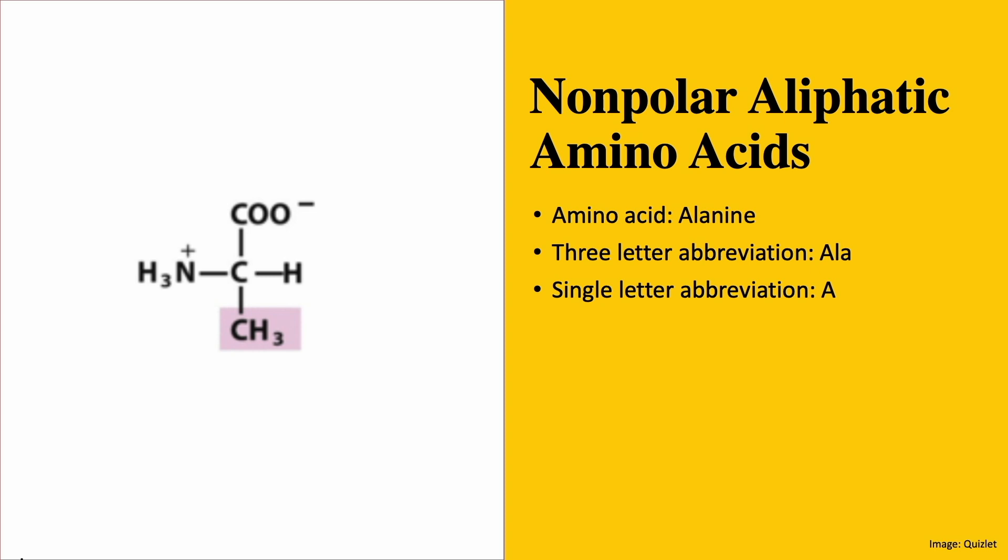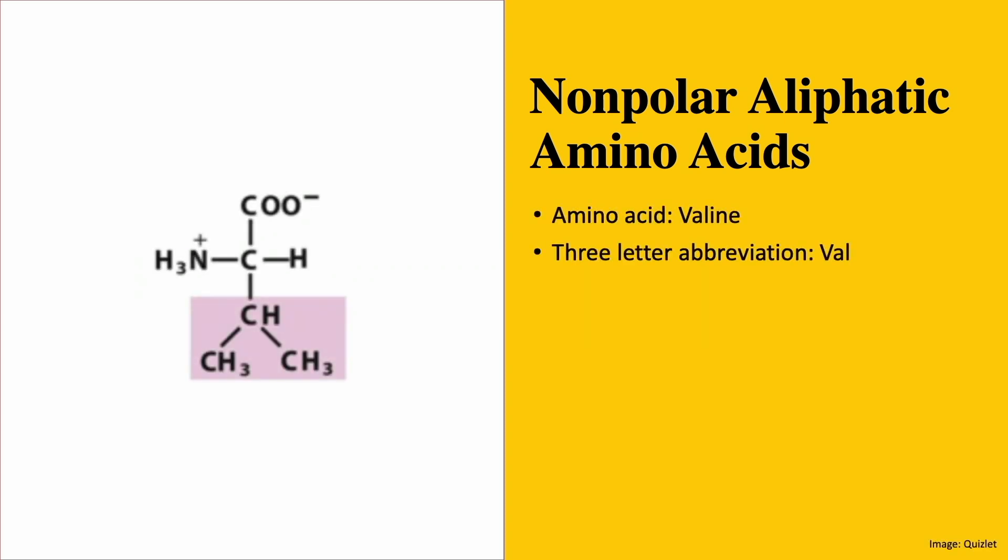Thirdly, we have valine. From valine onwards, the R groups start to become a little more complex. However, the way I remember valine is by seeing that the R group of valine looks like a V. Two additional carbon atoms have been added to the R group of alanine to create valine by creating the shape of a V.